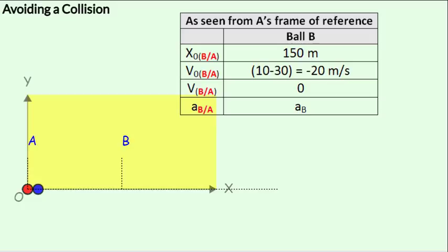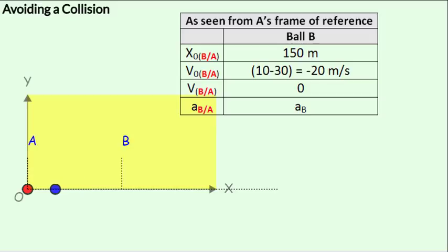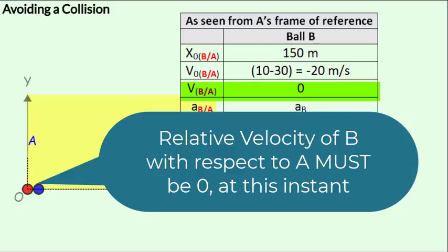The initial velocity of B with respect to A would be VB minus VA, or 10 minus 30, which is minus 20 meters per second. Now this point is very important: in order to just avoid the collision, the relative velocity of B with respect to A would have to be 0 just at the instant when they are just about to collide. So the final velocity of B with respect to A just when they are about to meet would be 0.